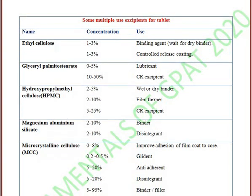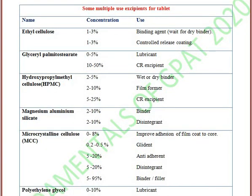Let's start. First one is ethyl cellulose. Ethyl cellulose is used as a binding agent as well as an excipient for controlled release coating. It is used in 1 to 3% concentration.